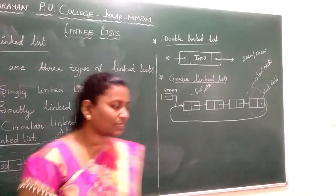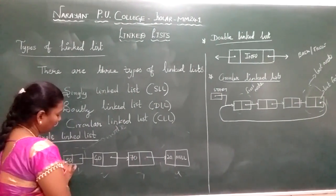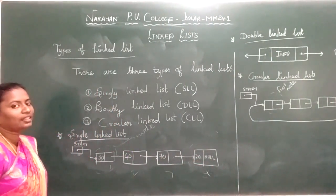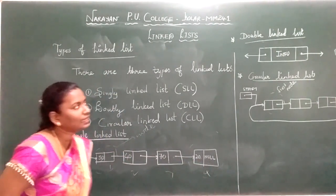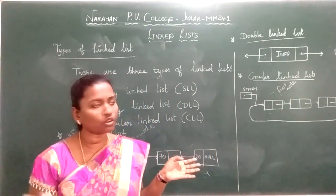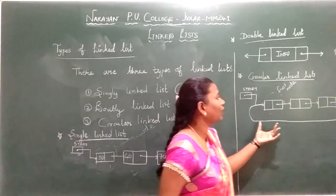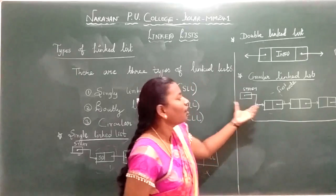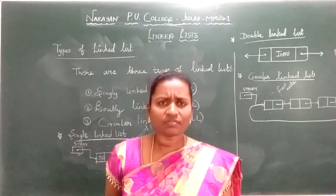In singly linked list, you have a start node and elements 50, 40, 70, 20 stored in nodes; the last field of your node is null, meaning it is not pointing to any other node. In doubly linked list, we have two-way linking — back and forth. In circular linked list, the last node's link field points to the first node. Next we will move on to algorithms.